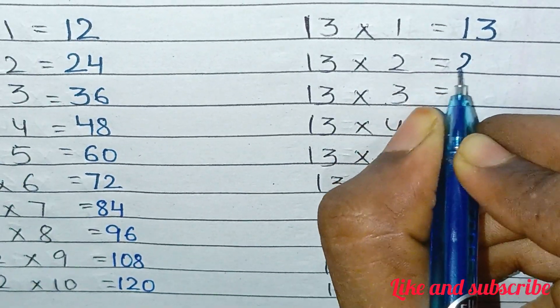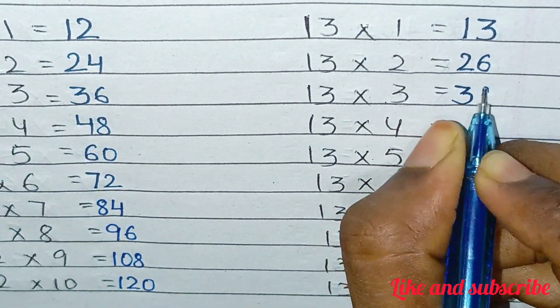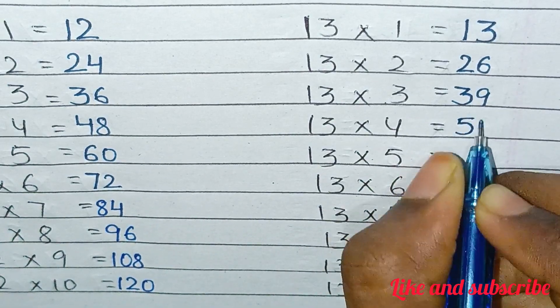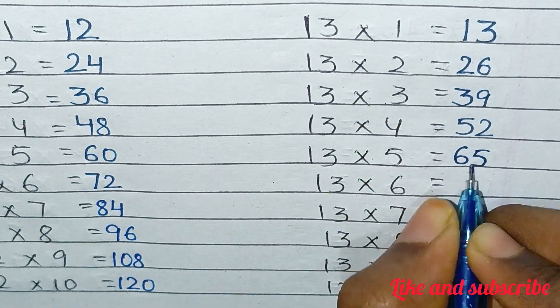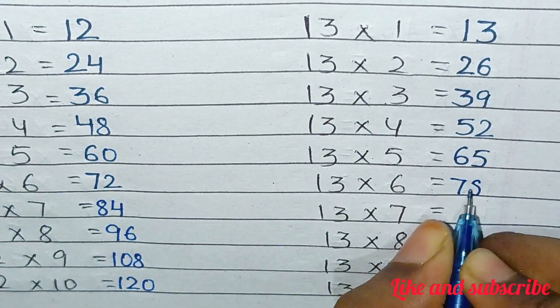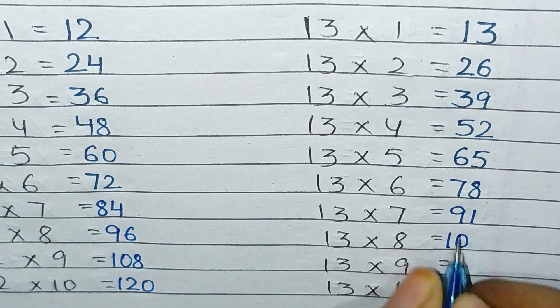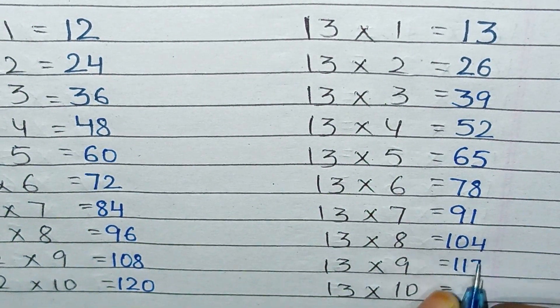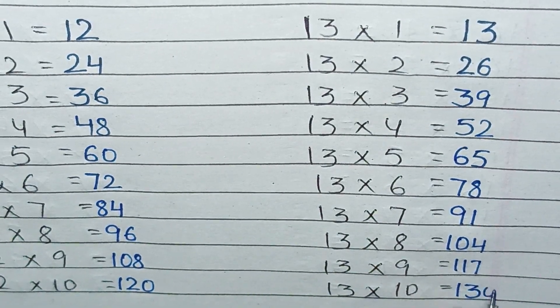13×1=13, 13×2=26, 13×3=39, 13×4=52, 13×5=65, 13×6=78, 13×7=91, 13×8=104, 13×9=117, 13×10=130.